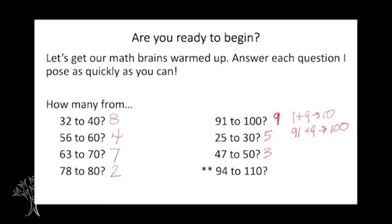Here's our last one — it's a challenge. How many from 94 to 110? Did you say 16? Nice. I bet some of you did it this way: 94 plus 6 gets me to 100, plus 10 gets me to 110. Some of you might have made a jump of 10 first and said 94 plus 10 gets me to 104, and then adding 6 more gets me to 110. Nice job! Now we're going to start our lesson for the day.